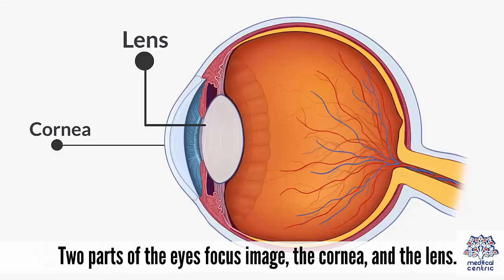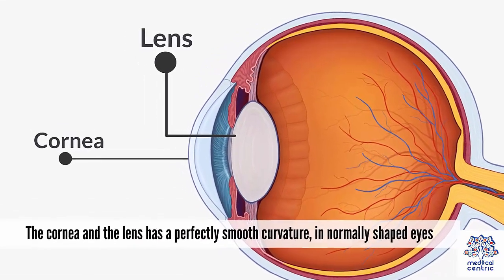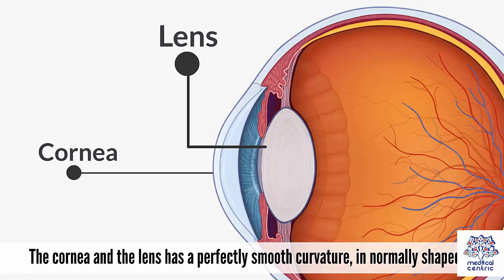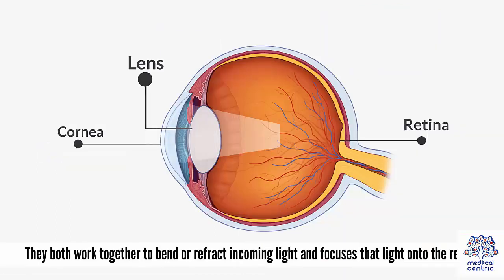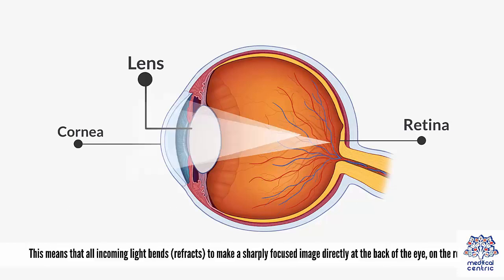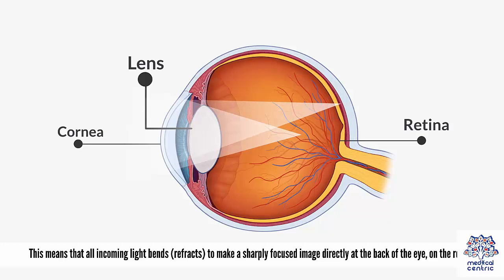Two parts of the eye focus an image: the cornea and the lens. In normally shaped eyes, the cornea and the lens have a perfectly smooth curvature. They both work together to bend or refract incoming light and focus that light onto the retina, so that all incoming light refracts to make a sharply focused image directly at the back of the eye.